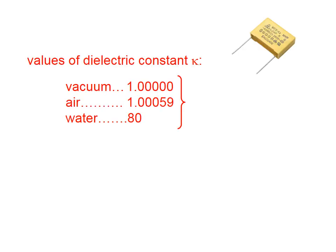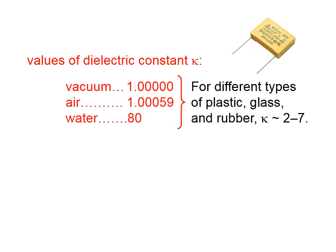Here are some values of the dielectric constant, which is symbolized by lowercase Greek kappa. The dielectric constant for air is very nearly that of empty space. Typically, for plastic or glass or rubber, the dielectric constant has a value between about two and seven.